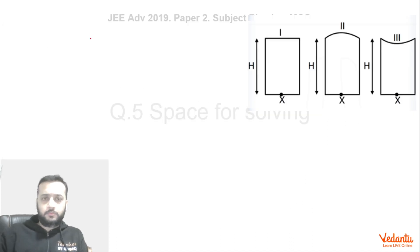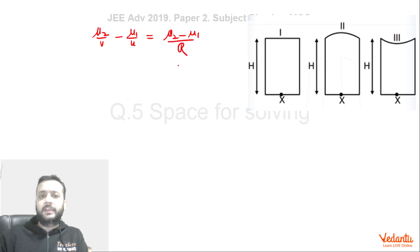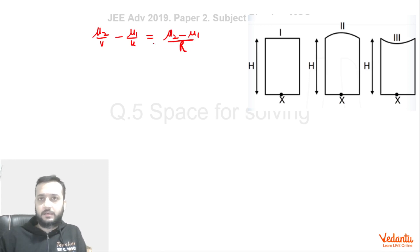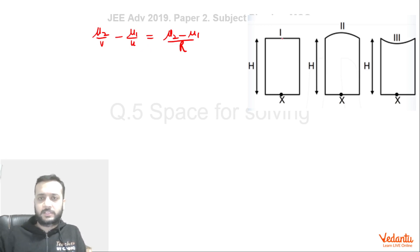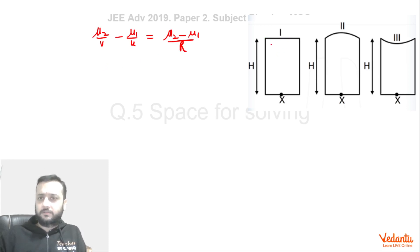Now I am going to write one formula: μ₂/v − μ₁/u = (μ₂ − μ₁)/R. This formula is for spherical refraction — whenever refraction happens on a spherical surface, this formula can be used. But a flat surface is also a special case where radius is infinity, so if you put R as infinity you get the standard apparent depth result: apparent depth / real depth = μ₂/μ₁. I am writing just one formula for all three cases.